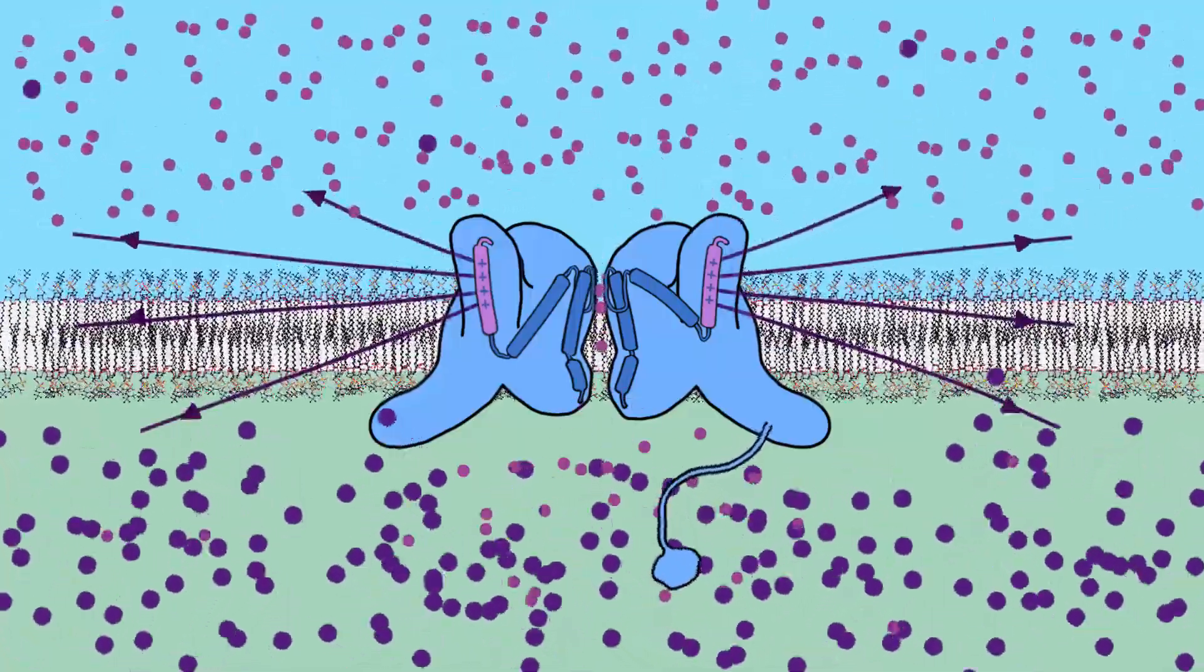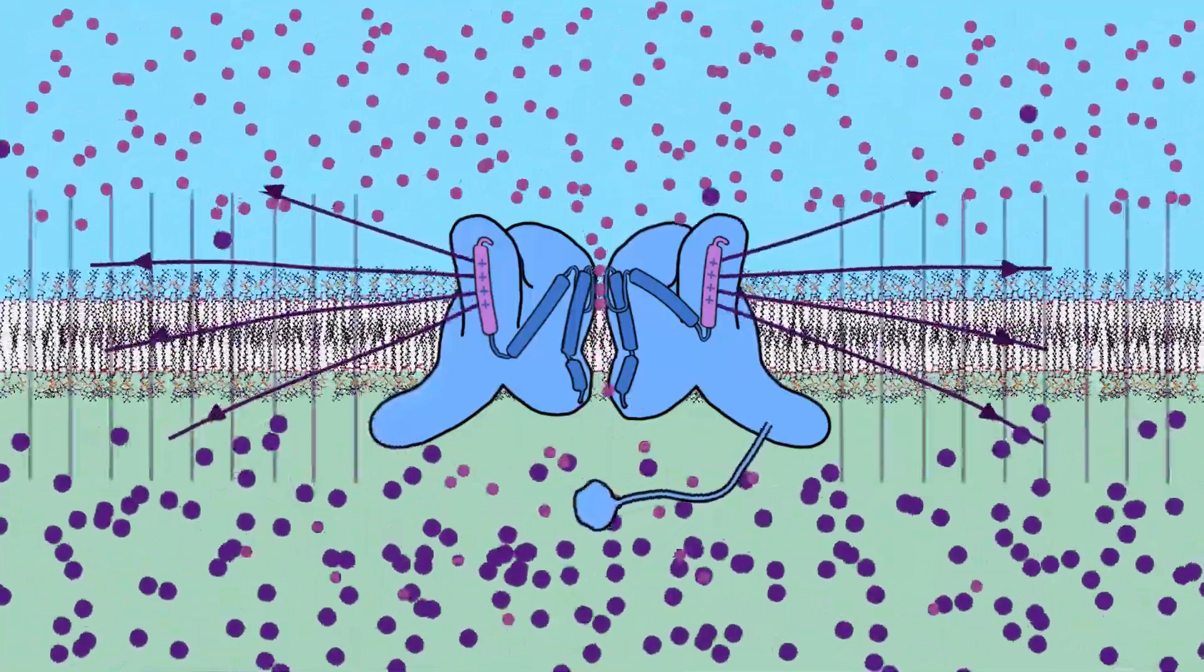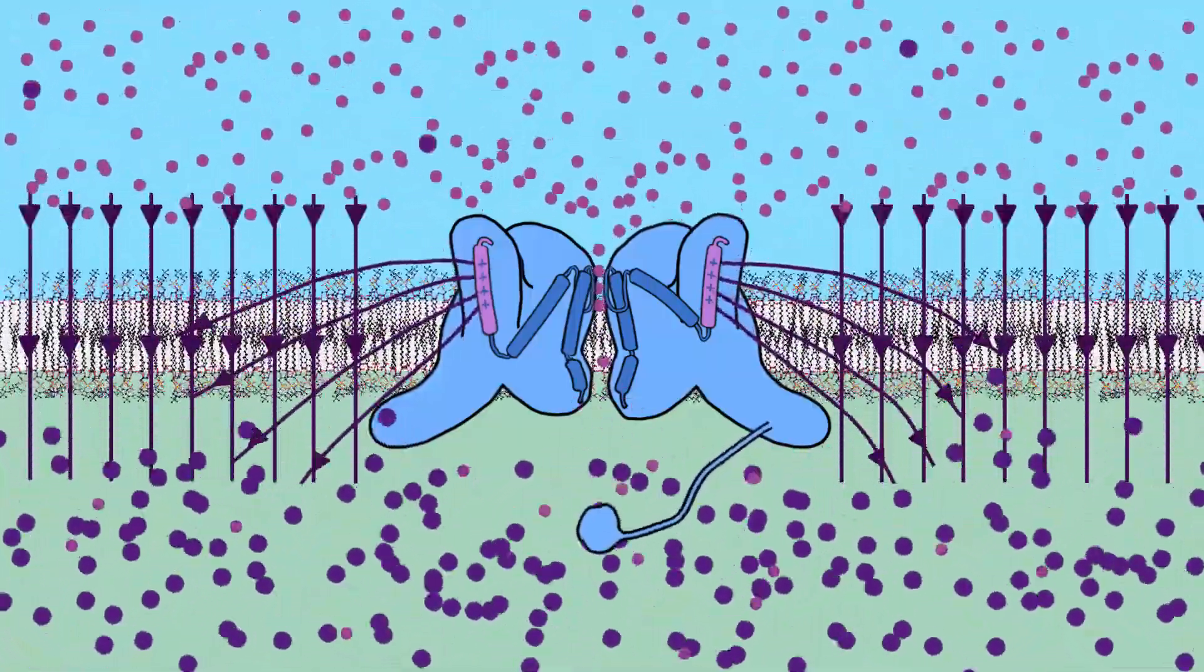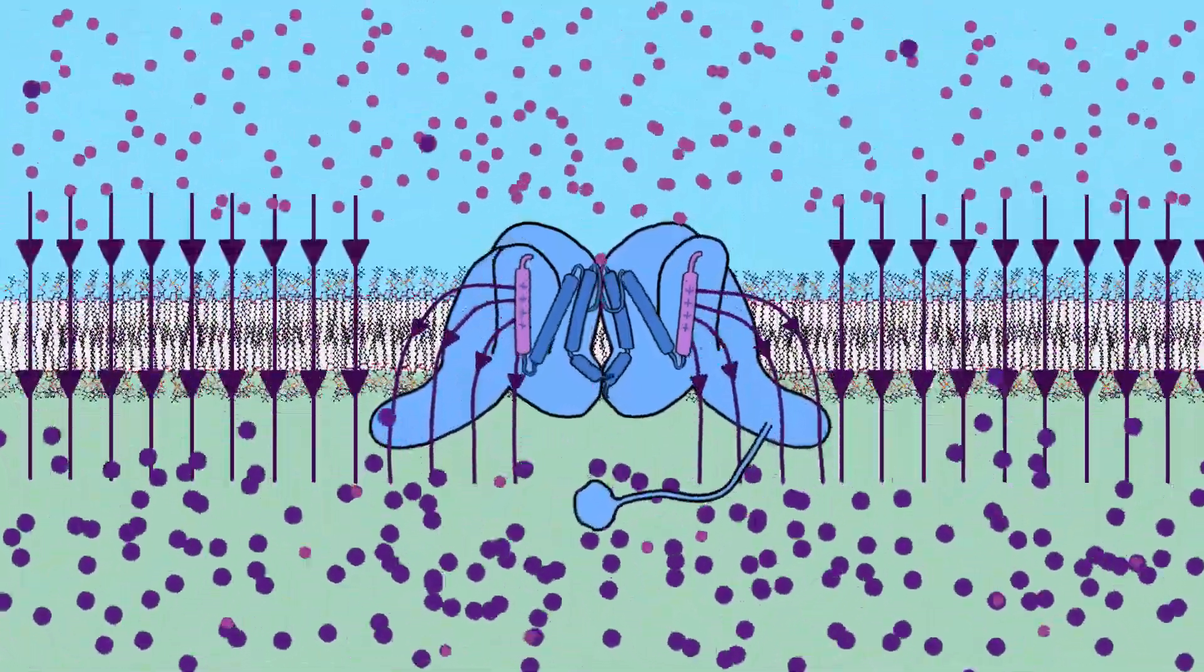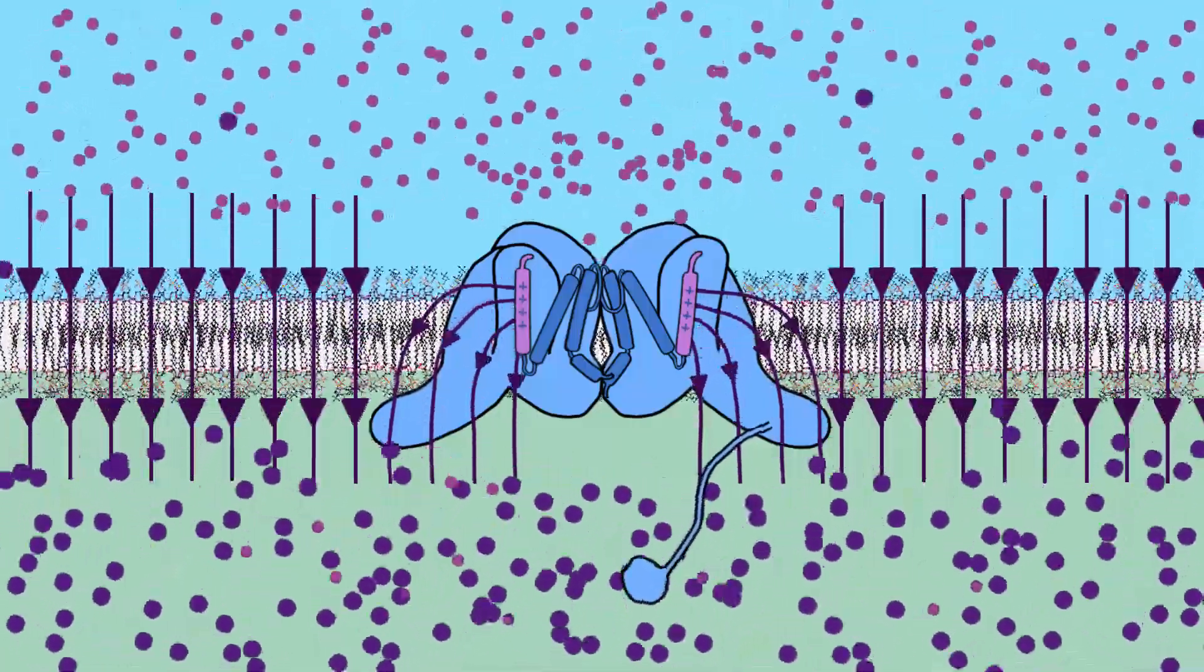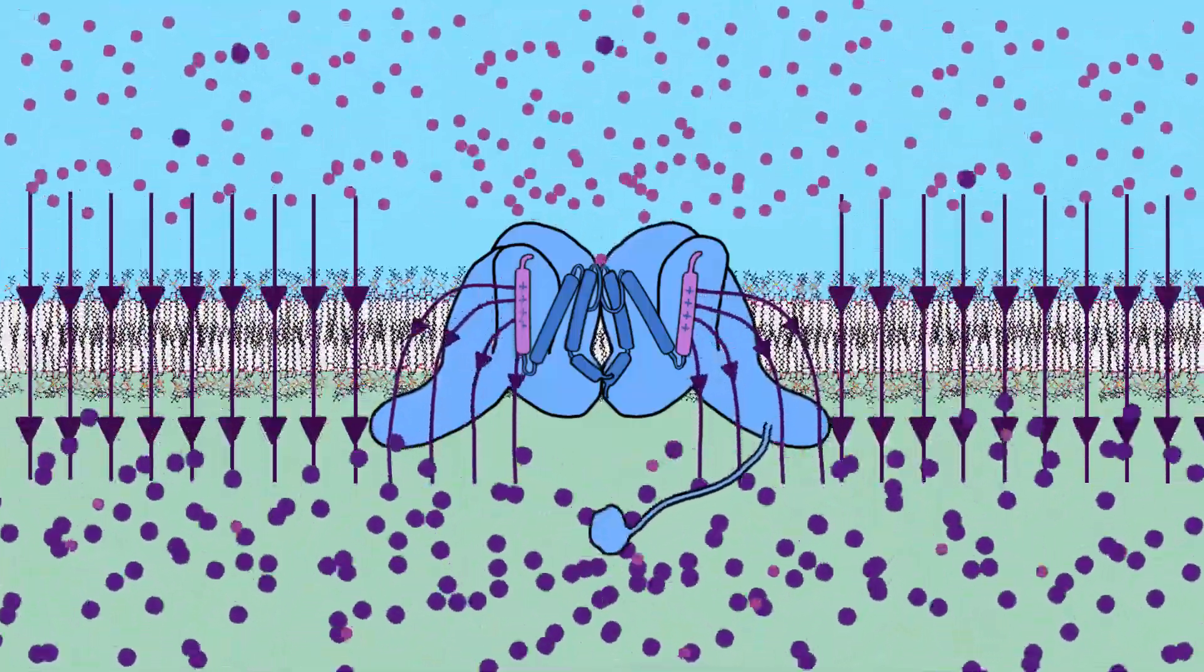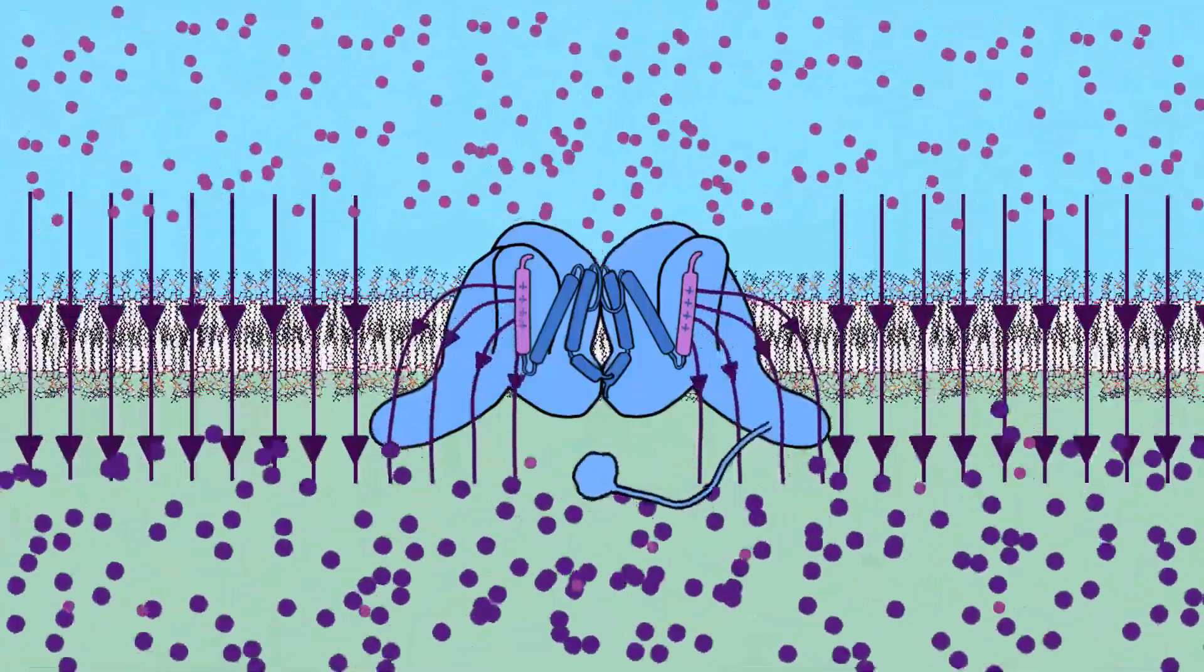But when the inside of the membrane contains a negative charge less than minus 50 millivolts, it is strong enough to attract the positive segments of the protein. And as long as the voltage is kept below minus 50 millivolts, the protein is kept closed.